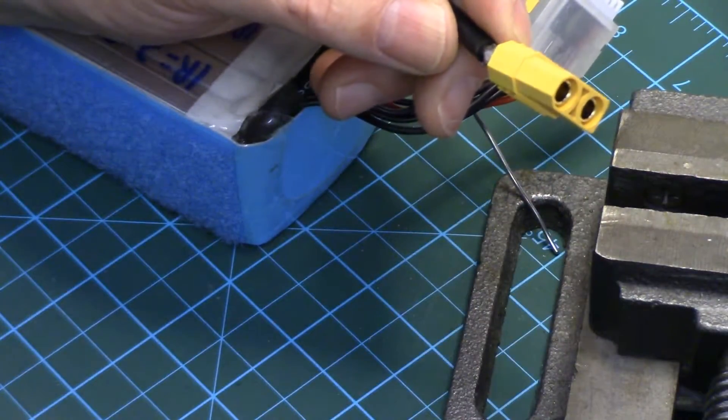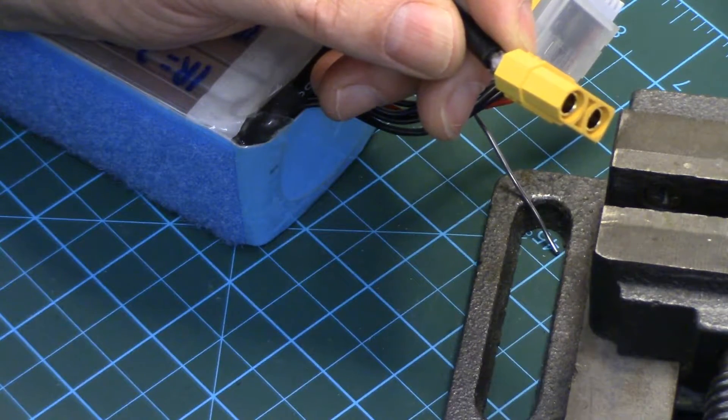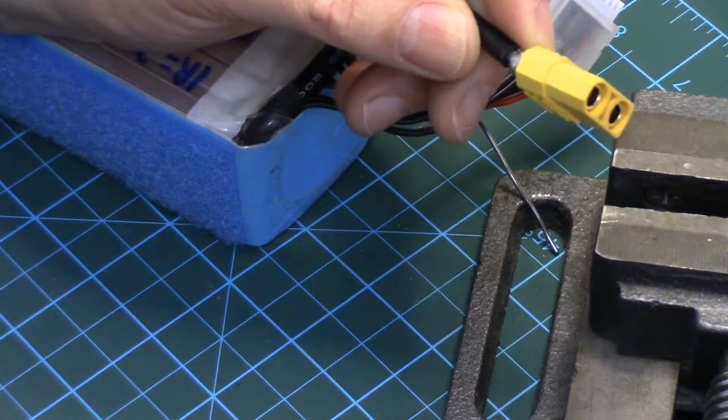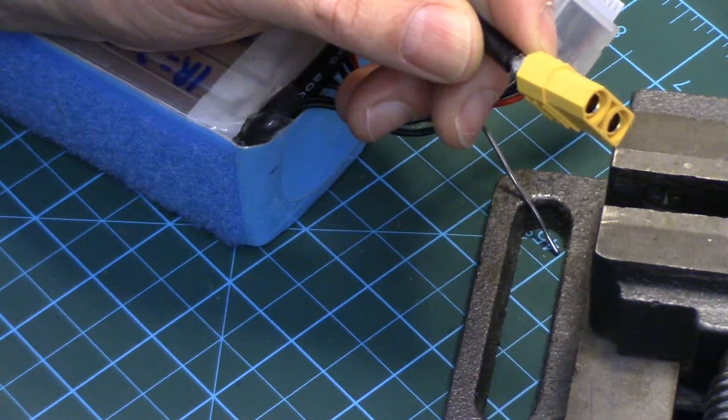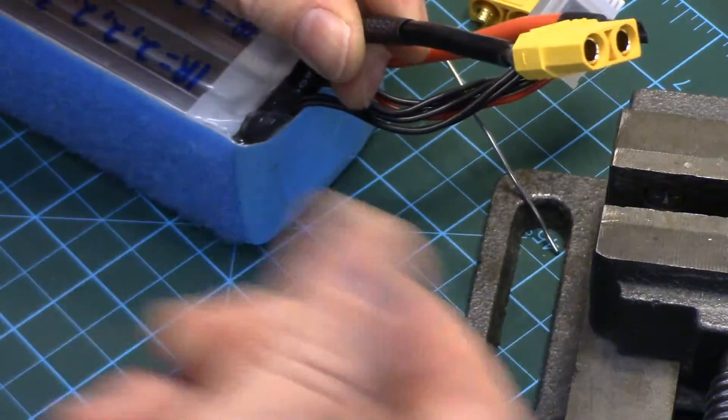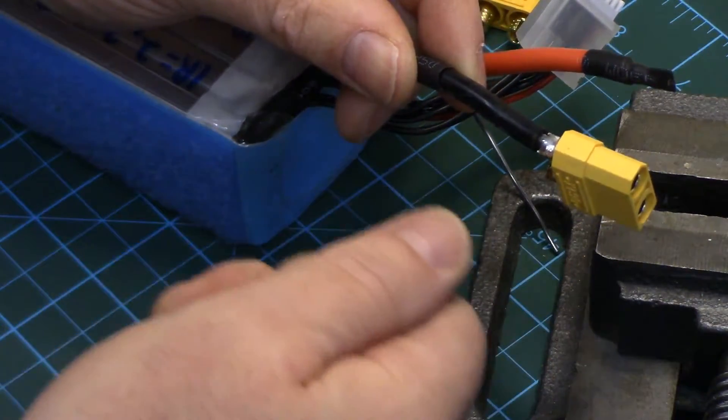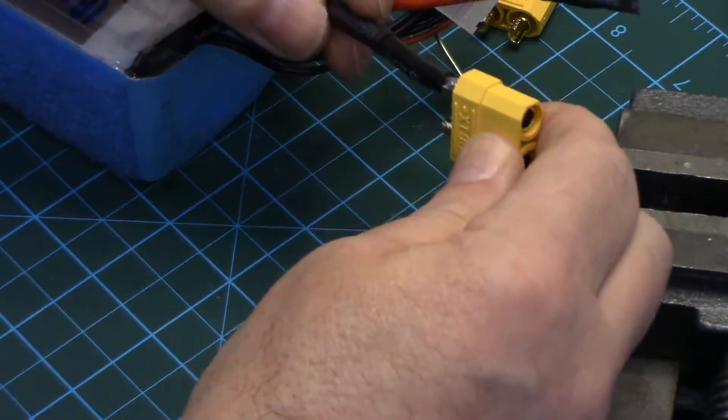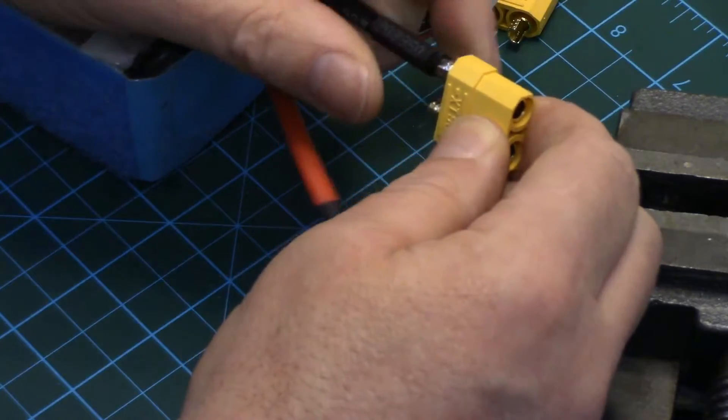I'm just going to turn on my SMD rework station here. You could use anything to heat, whatever you use to heat your heat shrink, or shrink your heat shrink. A heat gun. If you want to use a lighter, use a lighter with a flame. Usually the blue part of the flame is the best because it won't burn the heat shrink as quickly as the yellow part.